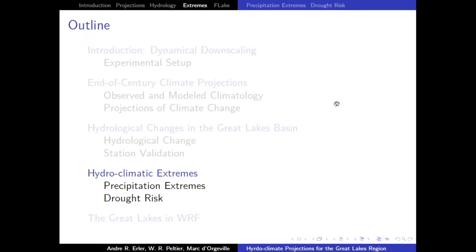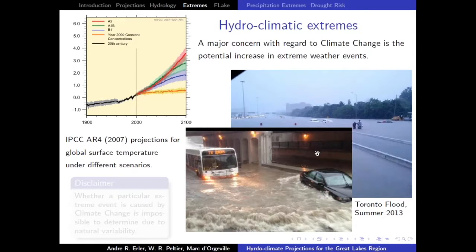A little bit about extremes. Three years ago we had a big flood in Toronto — the subway flooded completely from short-term heavy rainfall. And in the same year Alberta also had a huge flood. Canada had a significant flooding problem in 2013. More recently it was more about fire. So is this something that will be coming more often?